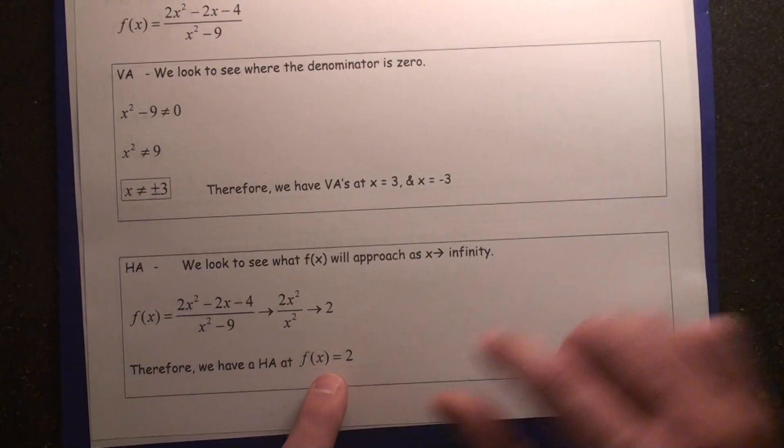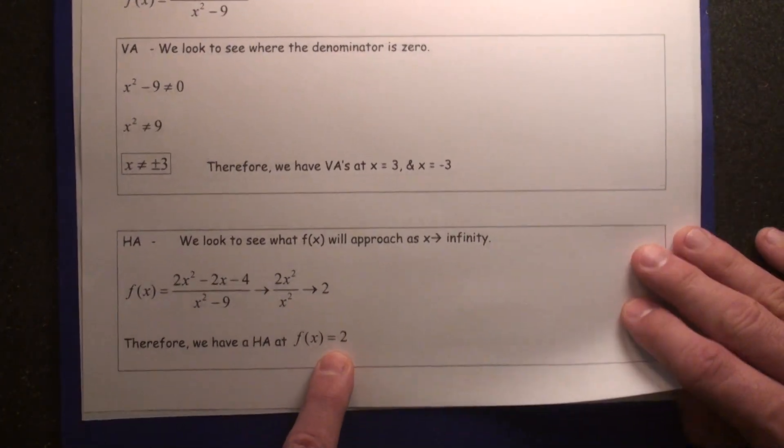Therefore, the horizontal asymptote is f of x equals 2, which is a horizontal line.